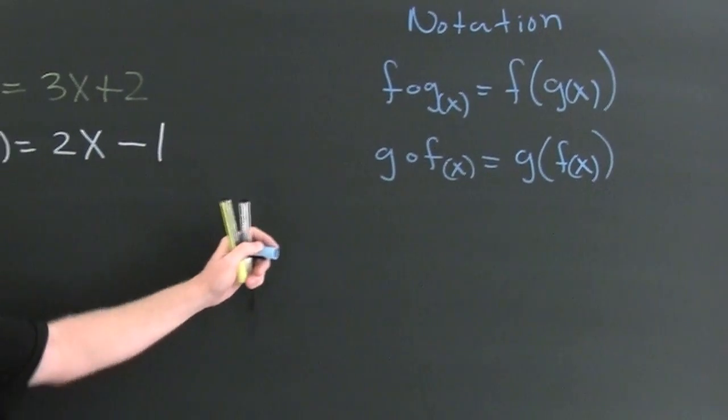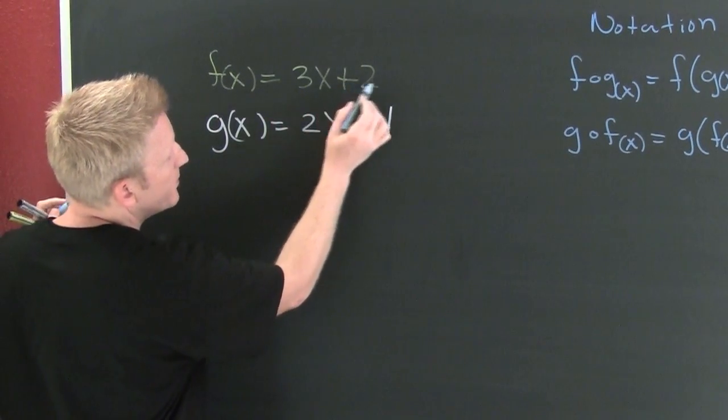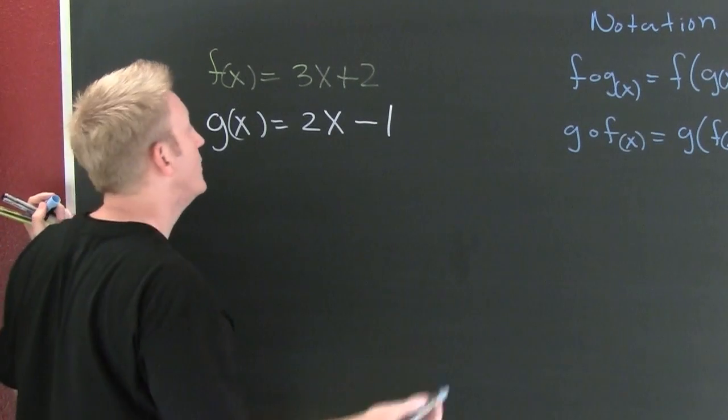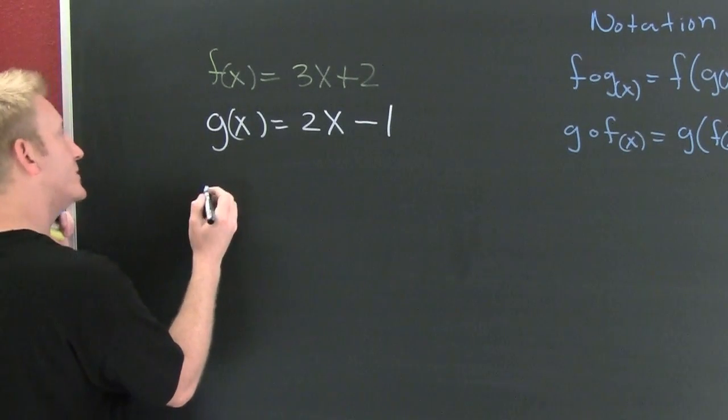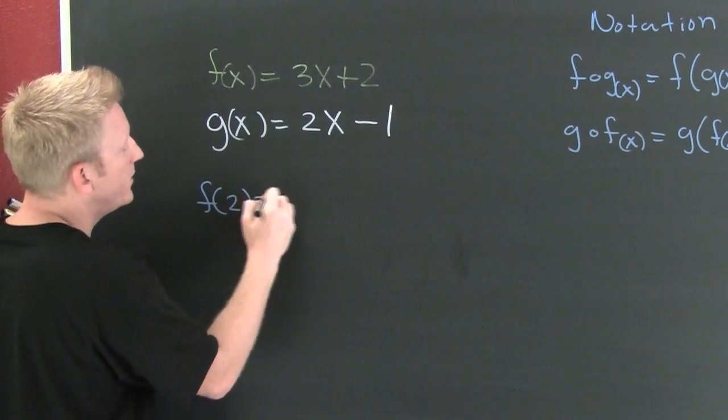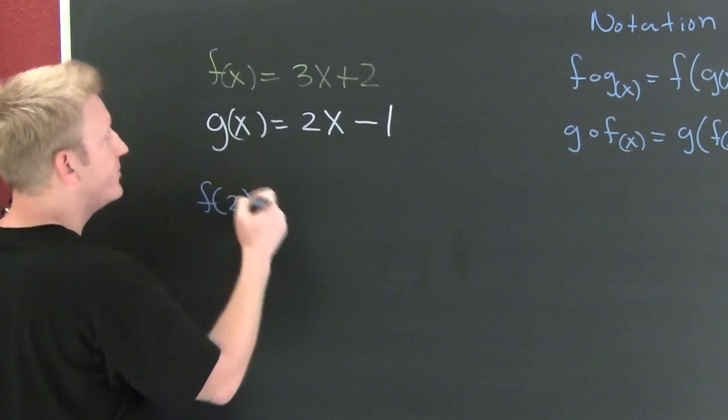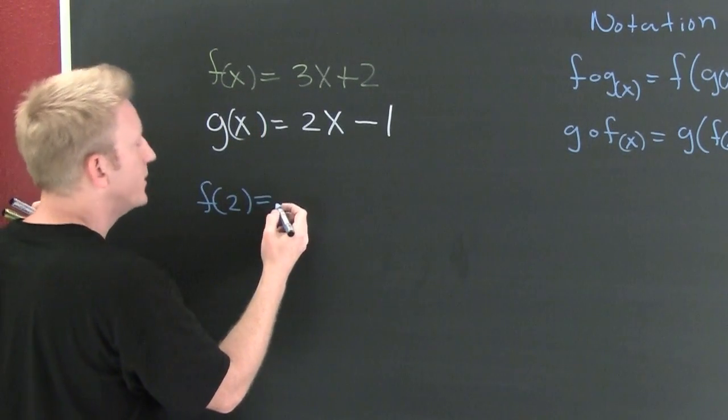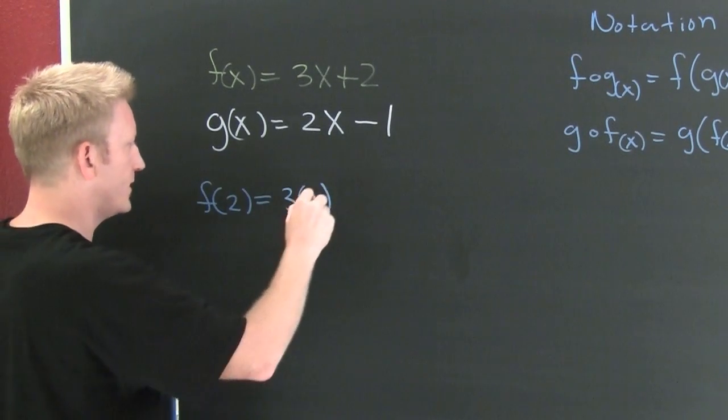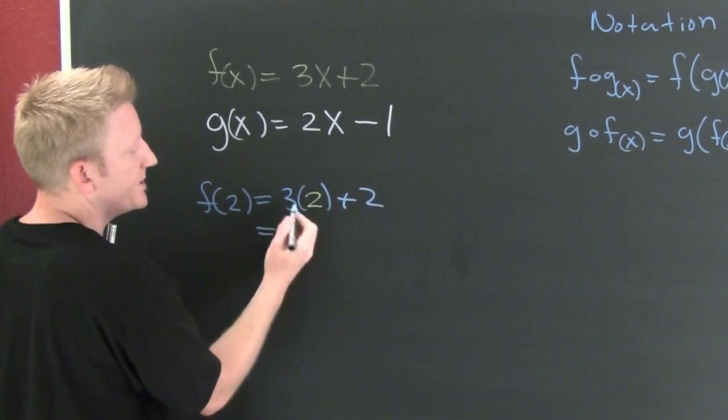Now that we've talked about the notation, we need to come to two examples. I have f of x is 3x plus 2 and g of x is 2x minus 1. In order to do this, I like to go through this little exercise. What's f of 2? Everywhere you see an x in f, you put a 2. So this is 3 times 2 plus 2, which is 6 and 2, that's 8.